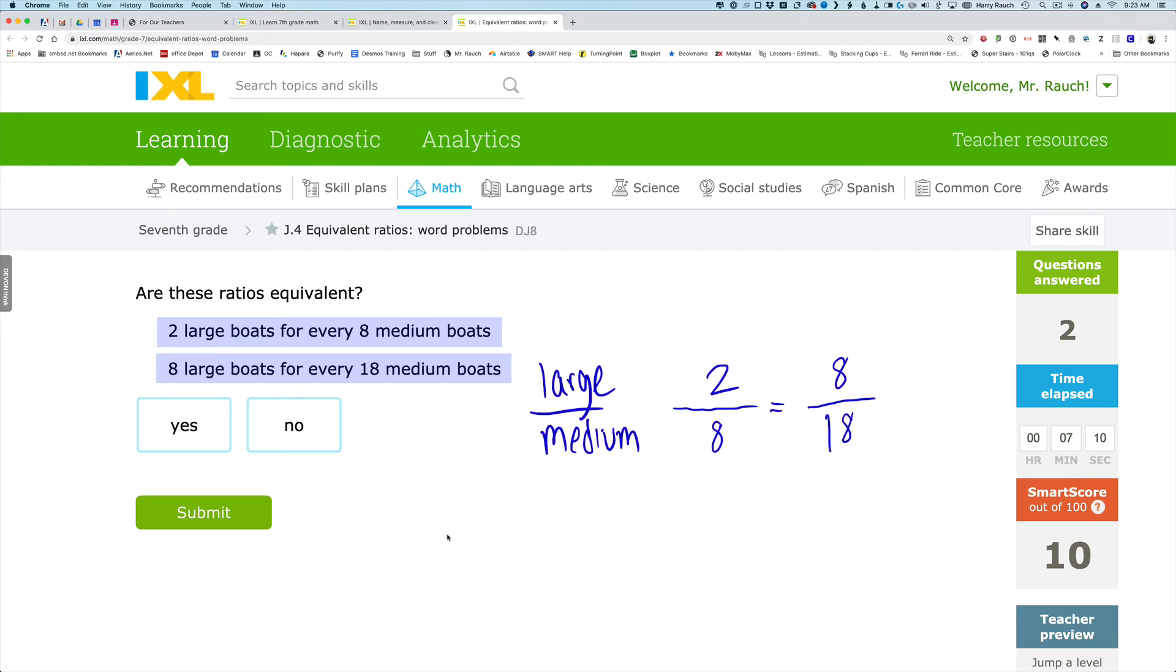And I'll give you two ways to think about whether or not these are equivalent. The first is try reducing each fraction and see if they're equal. So 2 over 8, I can divide by 2 and that equals 1 over 4. And 8 over 18, I can also divide by 2, and that's 4 over 9, which I can see does not equal 1 over 4. And that's one way to think about it.